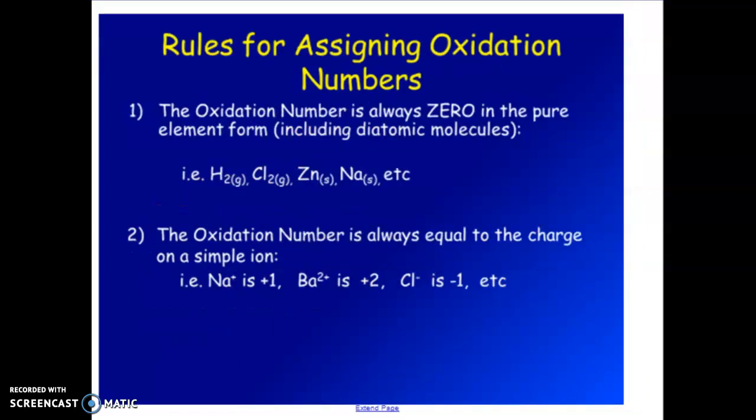Rules for assigning oxidation numbers. Number one: the oxidation number, or remember that's also referred to as oxidation state, is always zero when you are dealing with an elemental form of something. This also includes diatomic molecules. So anything that you will find in its natural state - liquid mercury, solid sodium, solid iron, neon gas, liquid bromine - anything the way that it would appear on the periodic table or in its natural state, you have a value of zero. So we have hydrogen gas, chlorine, zinc, and sodium, which are just two examples of metals. They would all have an oxidation number of zero.